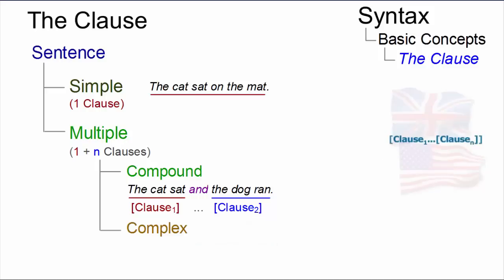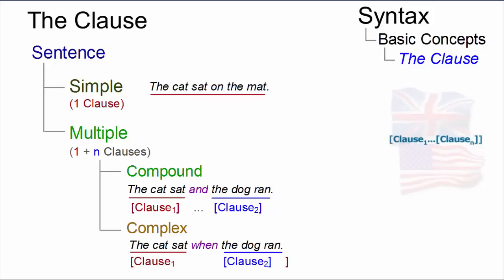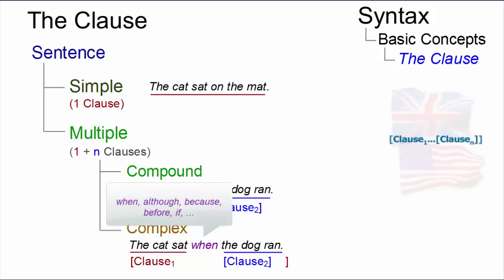Complex sentences, such as 'the cat sat when the dog ran,' by contrast, consist of a main clause and one or any number of subordinate clauses. The connection between the clauses is often signalled by means of subordinating conjunctions, such as when, although, because, before, if, and so on.